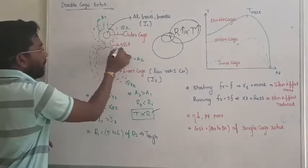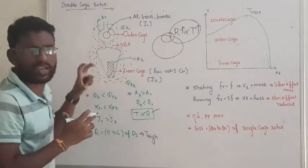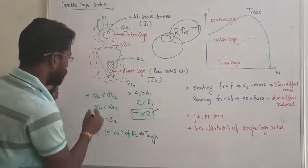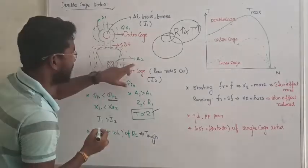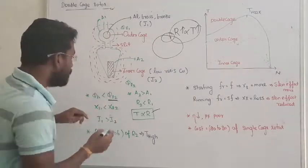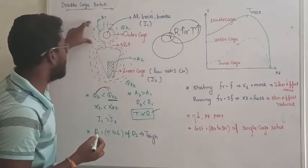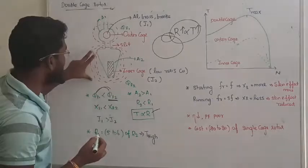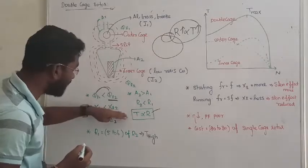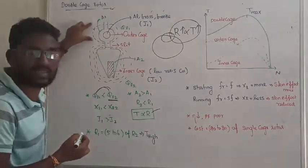Next step, when I am comparing this inner cage with the outer cage, the leakage reactance in the inner cage is once again very high. So when we are comparing these two, what will happen? Inner cage leakage reactance is greater than the outer cage leakage reactance.